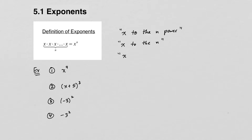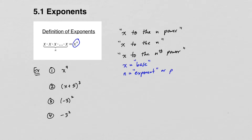Others might say x to the nth power, and all of these are correct. In this expression, x is what we call the base, and n is called the exponent, or sometimes called the power. We'll work on a few really basic examples to make sure that we understand the basic concept of an exponent.